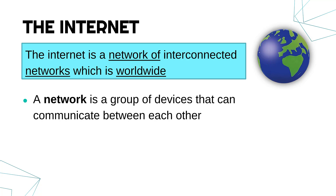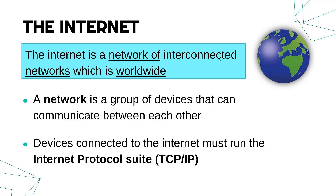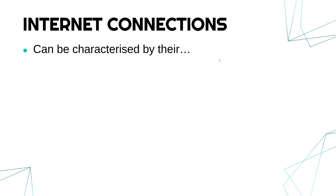In your home you might have a wifi network which just consists of a few computers in your house, but that is probably part of the internet as well — so it's a network of networks which is worldwide. The internet specifically is running a set of protocols called the internet protocol suite, often shortened to TCP/IP. To be part of the internet you've got to connect up to it, but also be running the same software as other internet devices. These properties apply to any network, so bear that in mind.